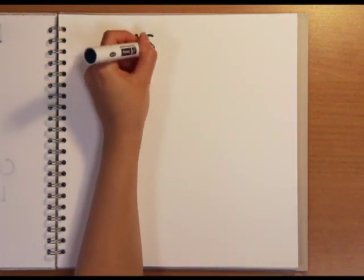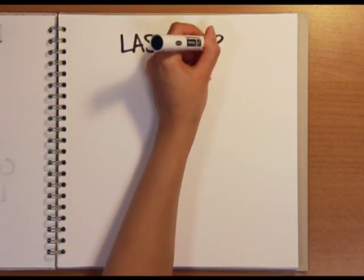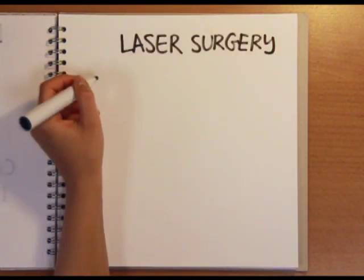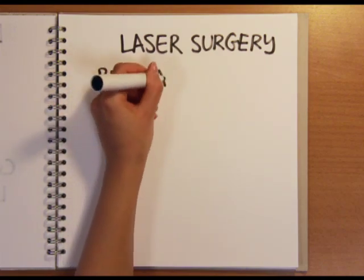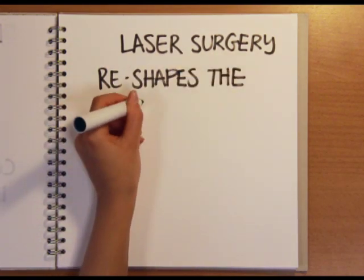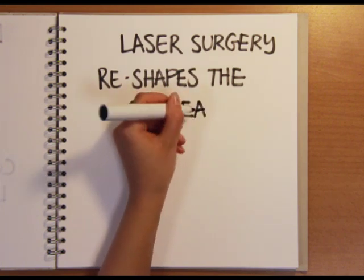Now we come to how laser eye surgery can help. The aim is to correct the way in which light focuses onto the retina but instead of using a lens in front of the eye it works by reshaping the cornea itself.